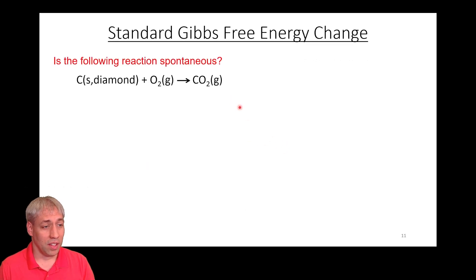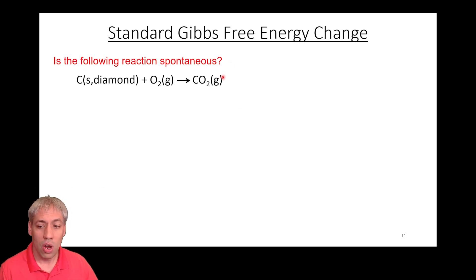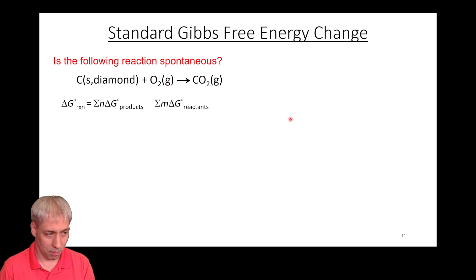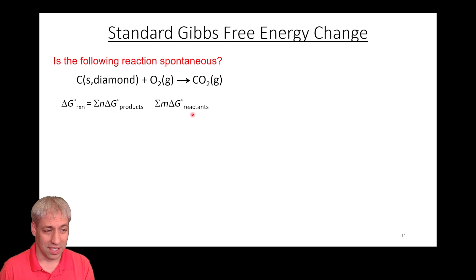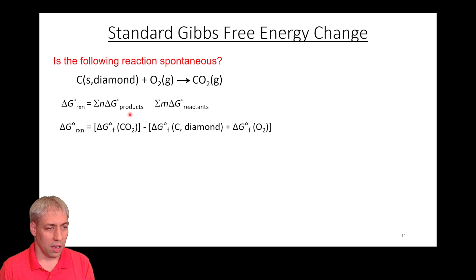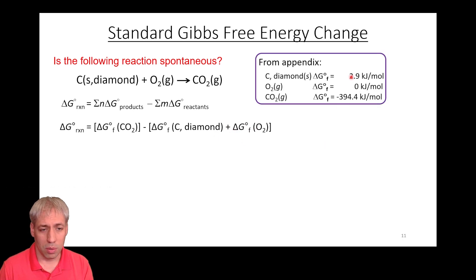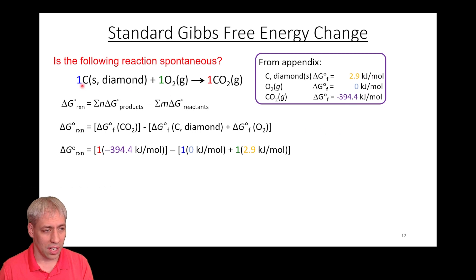For a quick example: we want to know whether this process is spontaneous. We have carbon in the form of solid diamond plus oxygen gas producing CO2 gas. Delta G of reaction equals delta G of products minus delta G of reactants. We have one product, so it's one times the Gibbs free energy of formation of CO2, minus the reactants — diamond plus oxygen. Using tabulated values, we can plug numbers into this equation.